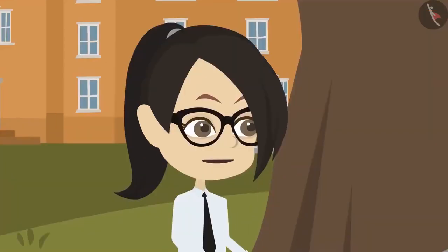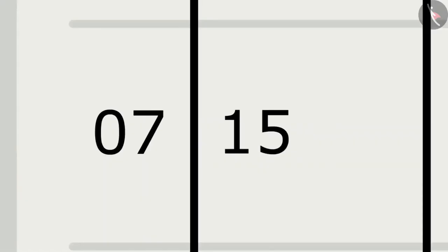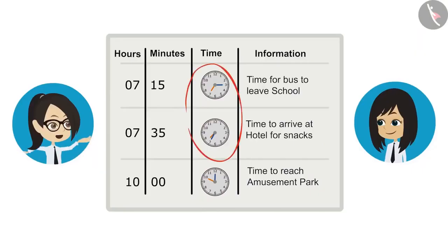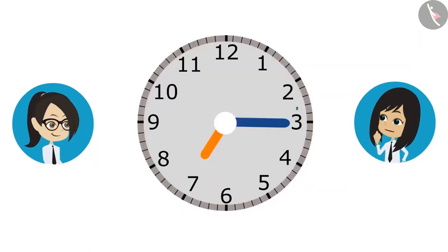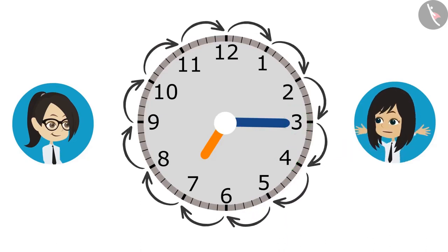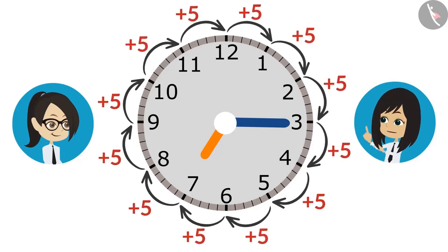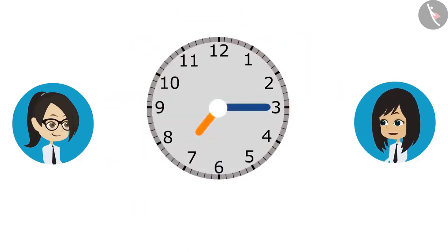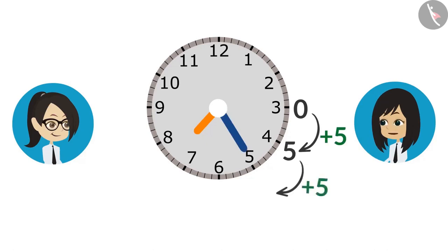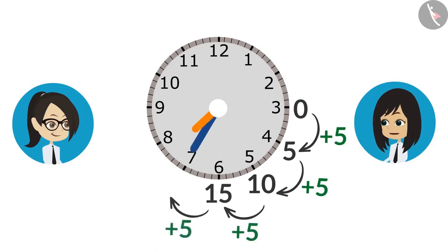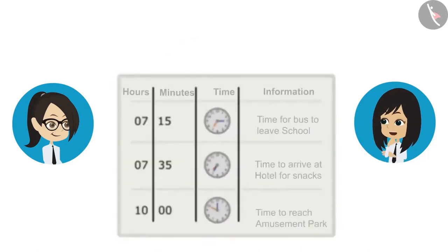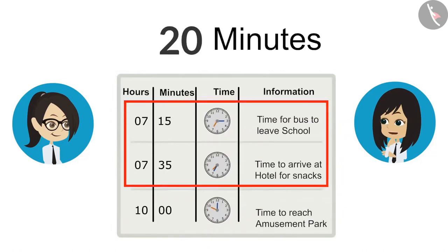Look at the minute hand when the time is 15 minutes past 7 o'clock — the minute hand is at 3. And when it is 35 minutes past 7 o'clock, the minute hand is at 7. We only have to find the difference between minutes. The difference from one number to another is 5 minutes. When the minute hand is at 3, we consider that as 0. It takes 5 minutes to reach 4, 10 minutes to reach 5, 15 minutes to reach 6, and 20 minutes to reach 7. This means the bus takes 20 minutes from school to reach the hotel.